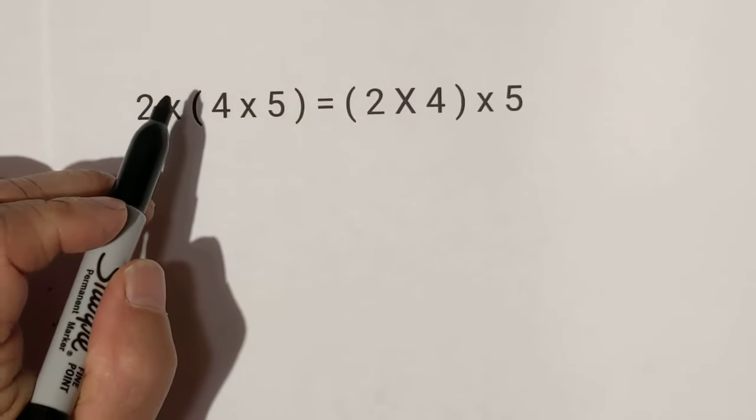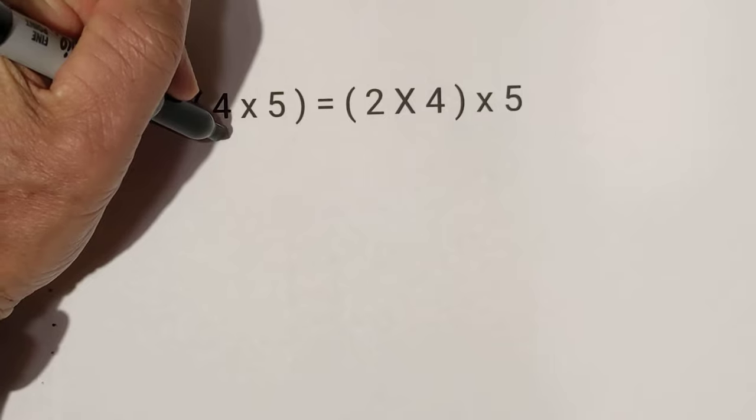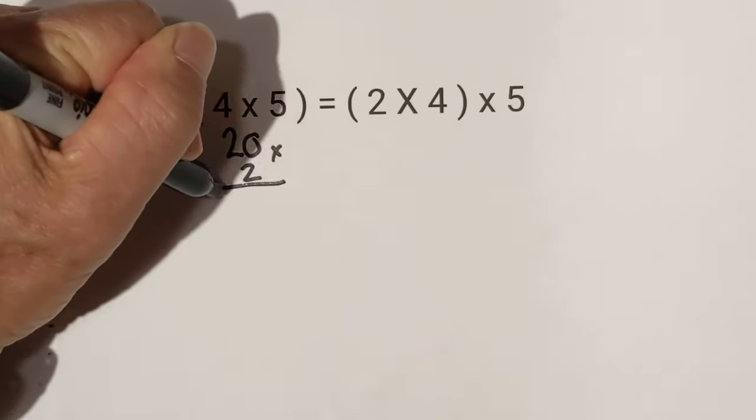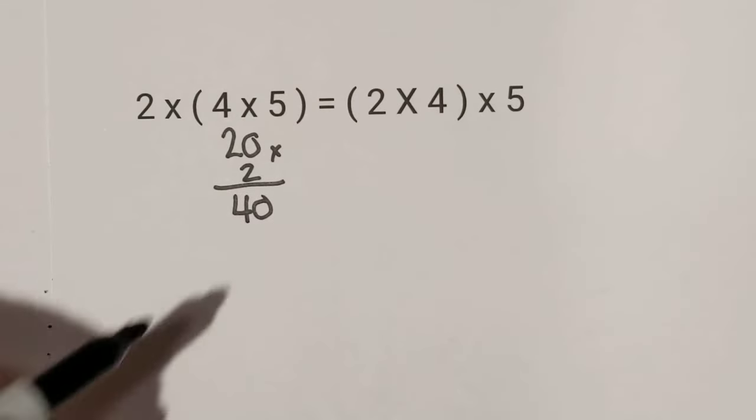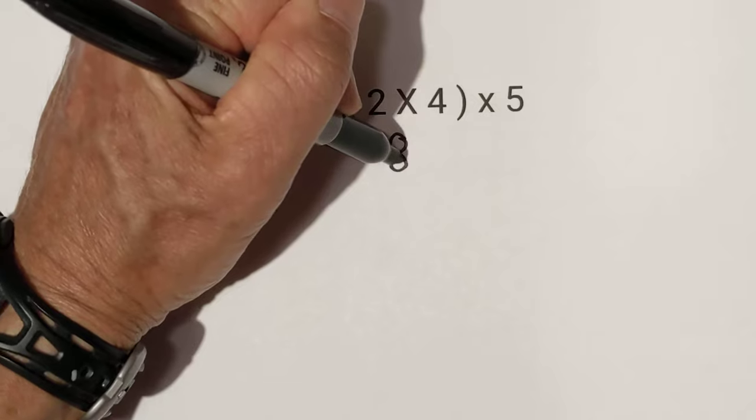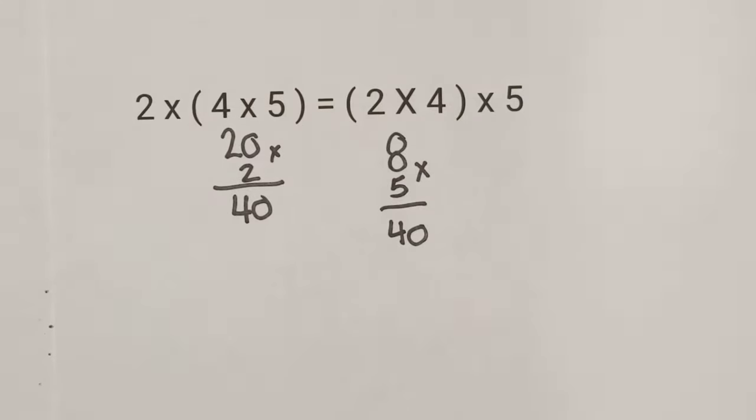4 times 5 is 20, times 2 is 40. But it's going to equal the same as this side. 4 times 2 is 8, 8 times 5 is 40. They are equal.